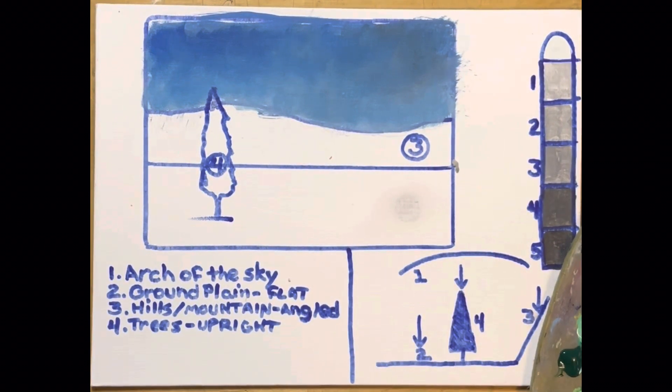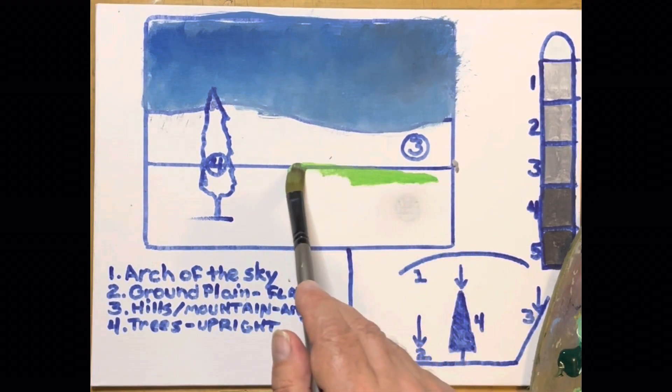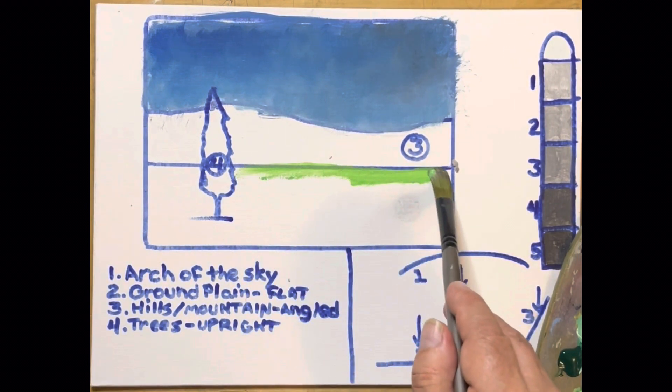So now, I'm going to start with the furthest ground away, which is going to be the lightest green.